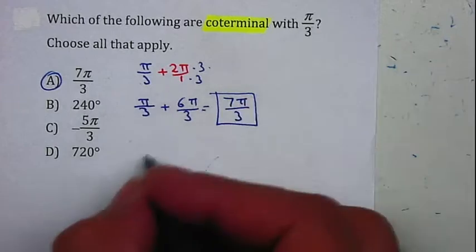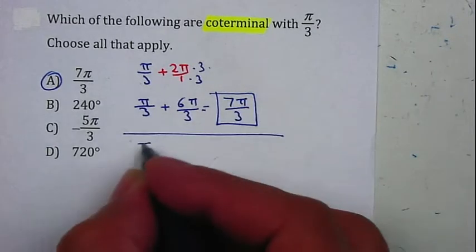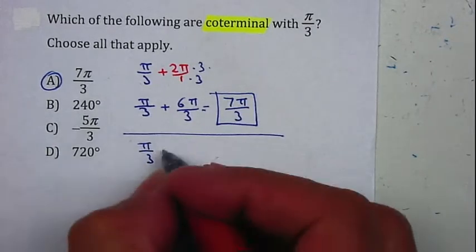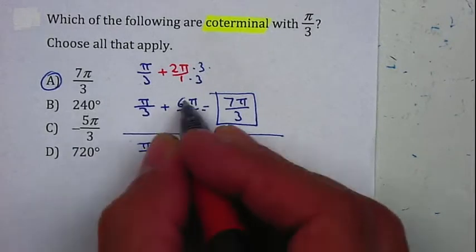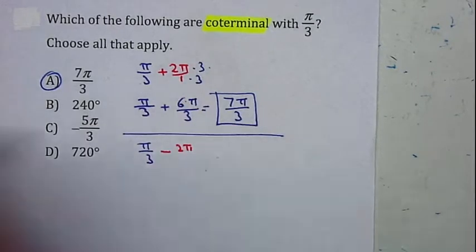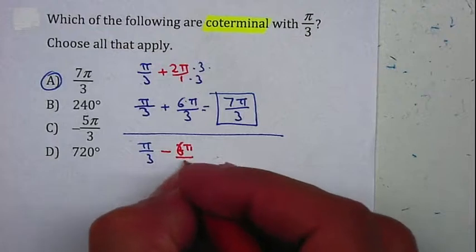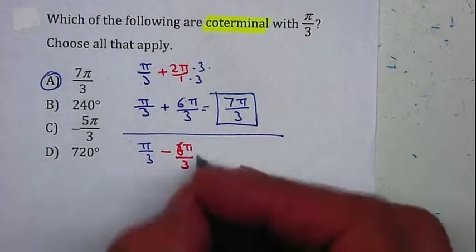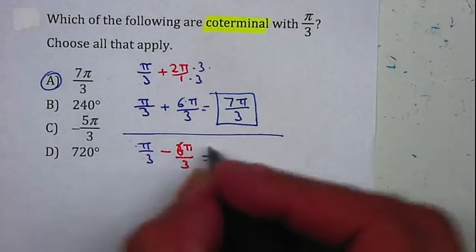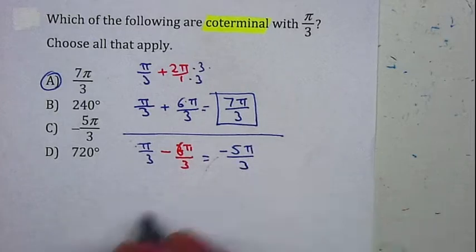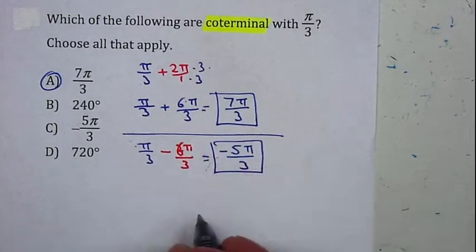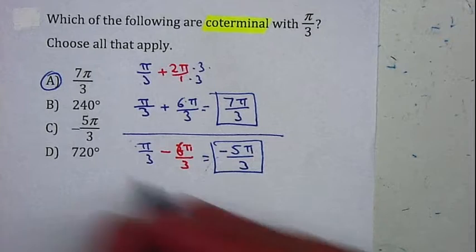So we're going to take π over 3 and we're going to subtract 2π. But we know that 2π is the same thing as 6π over 3. So let's subtract 6π over 3. And 1π minus 6π gives me negative 5π. That denominator stays the same. So therefore, negative 5π over 3 is also a coterminal angle.